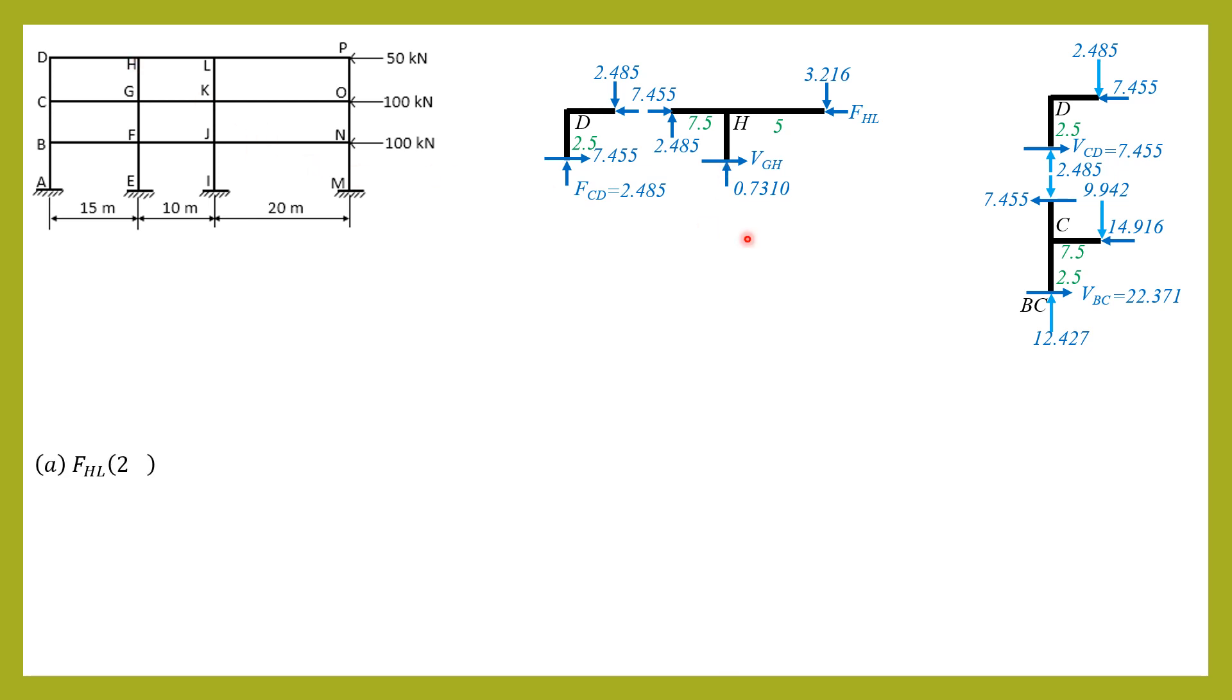For part A, summation moment about this point 0.0 considering this free body diagram. FHL times 2.5 equals 3.216 times 5 (5 is half of 10) plus 2.485 times 7.5 then plus 7.455 times 2.5. From there, we can solve FHL. FHL equals 21.342 kilonewtons.